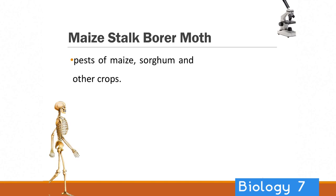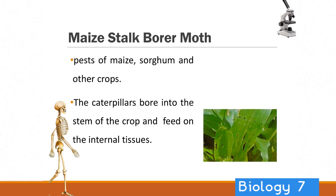Another detrimental insect is the maize stalk borer moth. This is another pest of maize, and also a pest of sorghum and other crops. As you can see, there's damage the caterpillars have done — they've bored into the stem and caused problems to the internal tissues. That is another pest that farmers like to avoid.